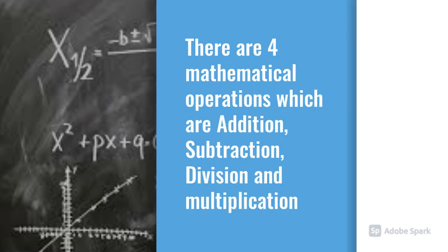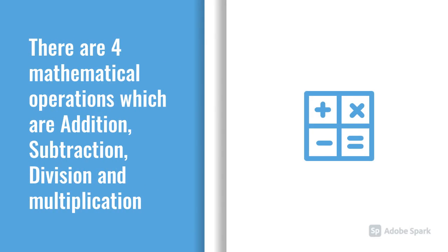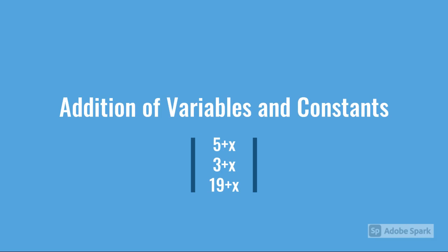What is operations? There are 4 mathematical operations which are addition, subtraction, division and multiplication. Addition of variables and constants: 5 plus x, 3 plus x and 19 plus x. These all are examples of addition of variables and constants.